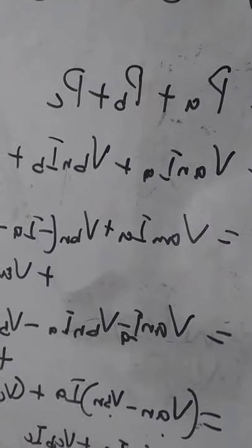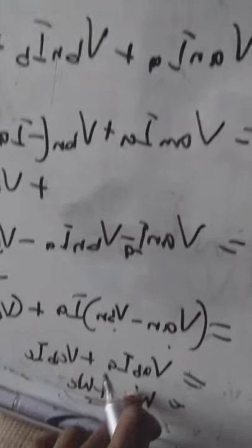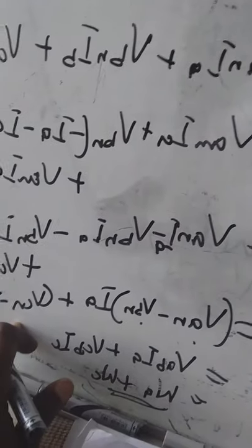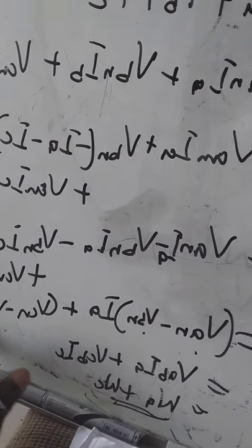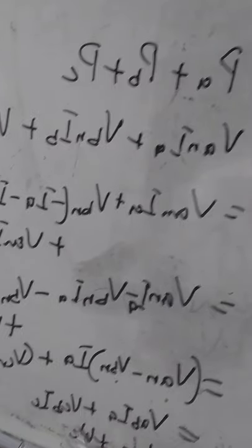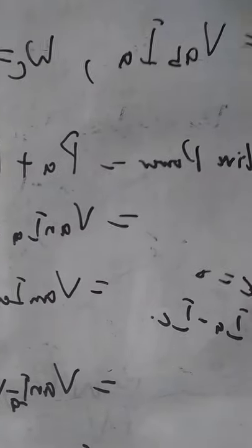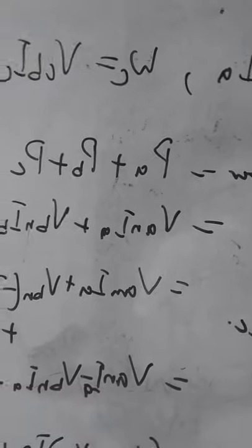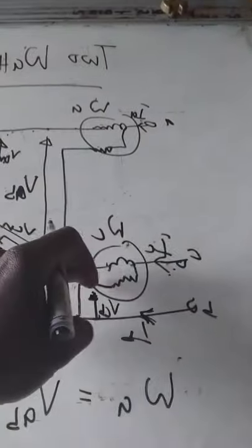So now with this, you use the same system: VCN minus VBN will be VCB, which is this. So VAB IA - that's watt meter reading A, which is WA. VCB IC - that's watt meter reading C, which is WC.